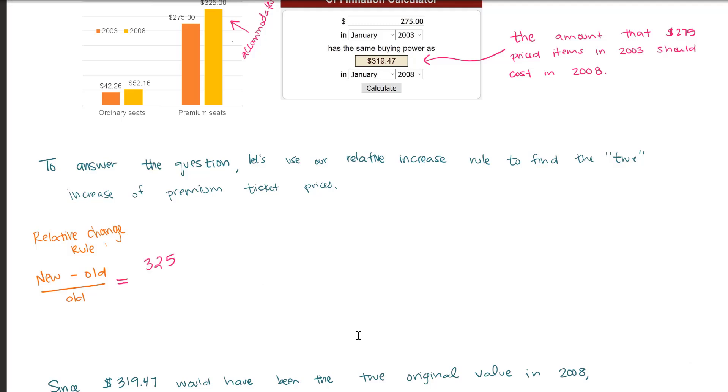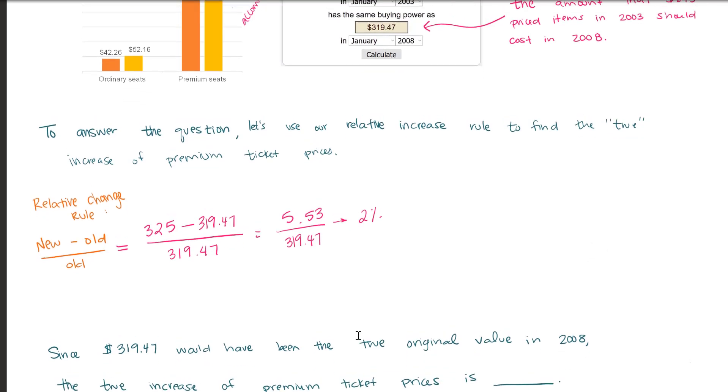Now, in the percentages, we let our new value be the $325 and we let our old value be the $275. But as we stated earlier, the true value of those $275 should have been $319.47. So that is going to be our old value. Then we do some quick maths from our Mathematizing module. And we can conclude that there was about a 2% increase in the premium seats and prices.